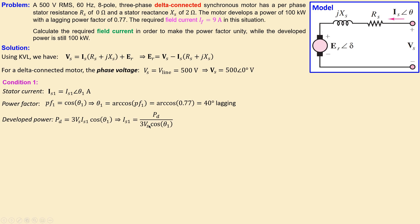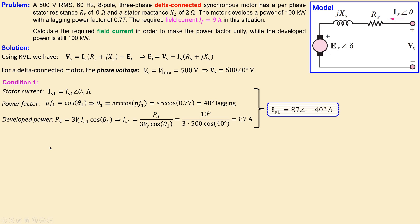Knowing the developed power, the phase voltage, and the power factor, we can solve for the stator current magnitude. Substituting the values gives 87 amperes. So the phasor representation of the stator current for condition one is 87 amperes at a phase angle of minus 40 degrees, because it is a lagging power factor.